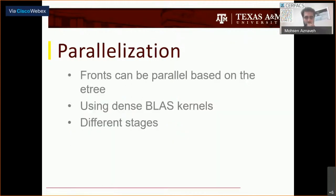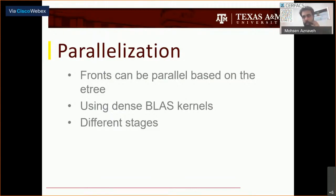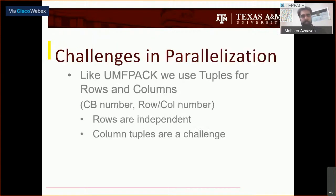Since then, there were some problems that we have already fixed. For parallelization, we can parallelize among the fronts and also use dense BLAS kernels — we already have parallel dense kernels. The challenges are that, just like UMFPACK, we are using tuples for rows and columns. Row tuples are independent, so any data structures we have for rows can still be used. Column tuples can be a challenge because there may be dependencies between columns, so we have to solve it somehow — and we did that since February.